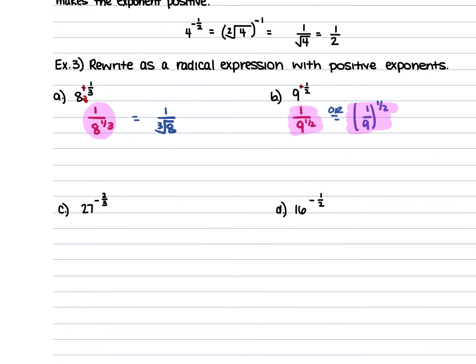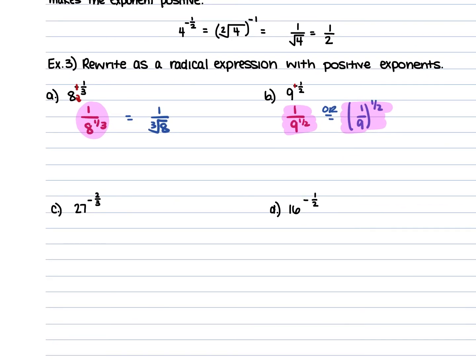For example c, we have 27 to the power of negative two-thirds. Turn that negative two-thirds into a positive by taking the reciprocal: 1 over 27 to the positive two-thirds. You can also write it as one-twenty-seventh to the two-thirds power. For example d, we have 16 to the power of negative one-half. Turn the negative one-half into a positive one-half, giving 1 over 16 to the power of one-half.